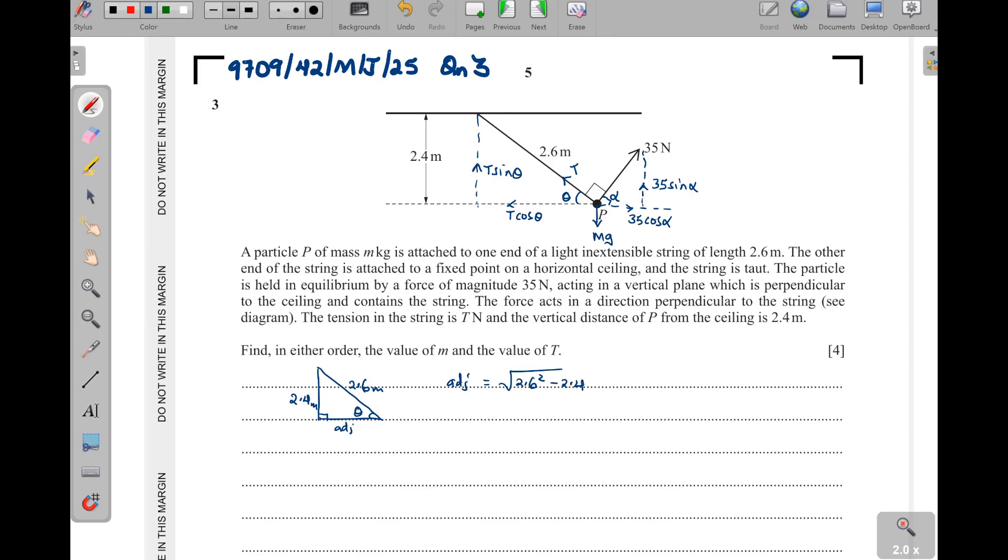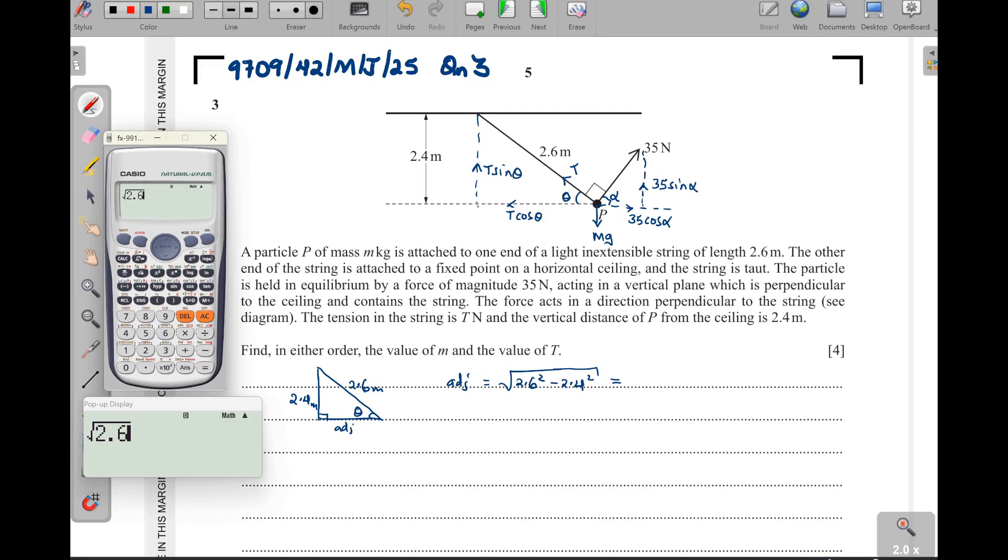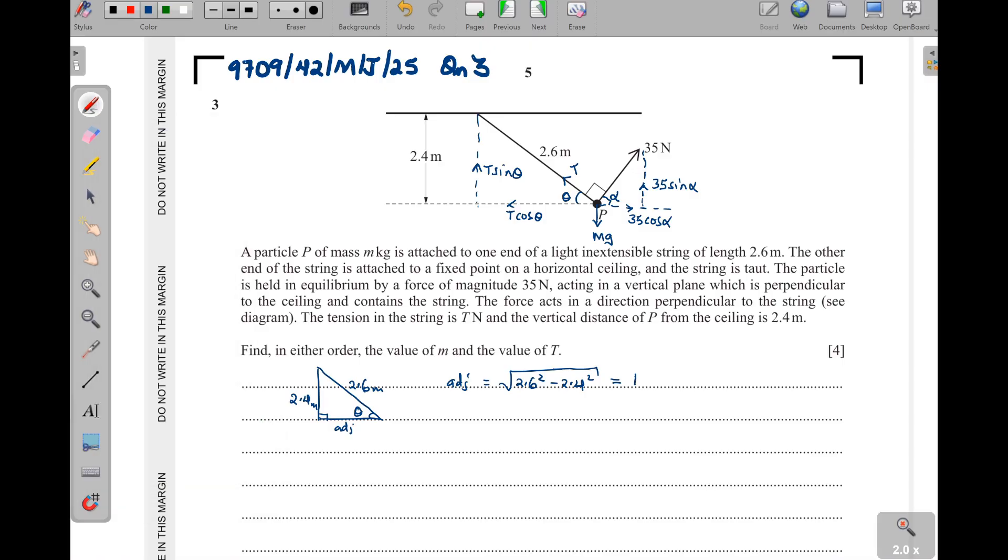What does this one give us? The square root of 2.6 squared minus 2.4 squared, that one will be a 1, so this one gives us a 1. Then after that, this simply implies that cosine of theta is equal to adjacent, which is 1, over the 2.6. And then sine of theta is going to be equal to the opposite, which is 2.4, out of the hypotenuse, which is 2.6. Now we are done with that. Now we can go.